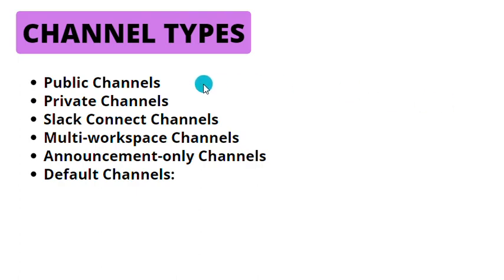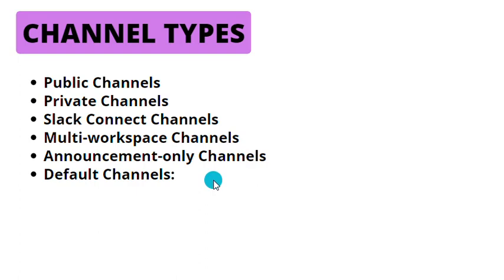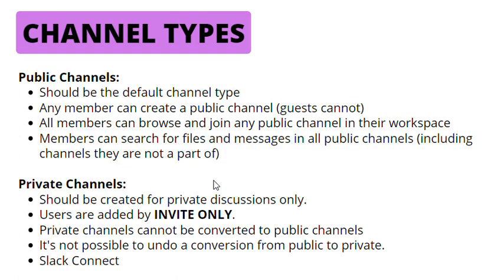So as you can see, there are public channels, private channels, Slack Connect channels, multi-workspace channels, announcement-only channels, and default channels. Starting with public channels, public channels should be the default channel type in your workspace. Any member can create a public channel, except for guests. All members can browse and join any public channel in their workspace, and members can search for files and messages in all public channels, including channels they aren't a part of.